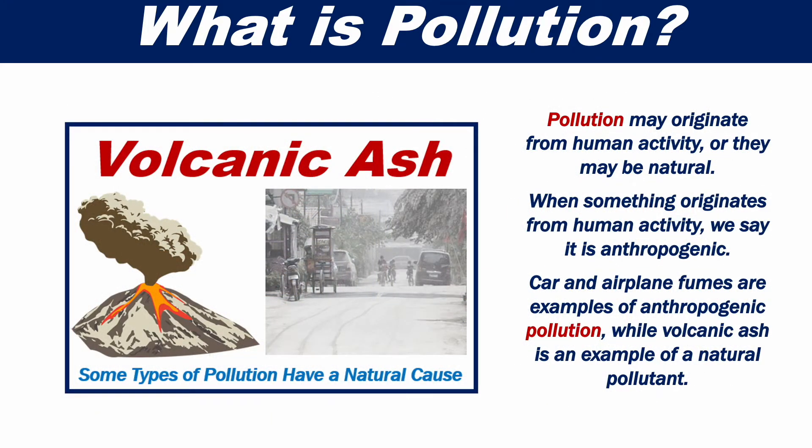Pollution may originate from human activity, or it may be from a natural origin. When something originates from human activity, we say that it is anthropogenic. Car and airplane fumes are examples of anthropogenic pollution, while volcanic ash is an example of a natural pollutant.